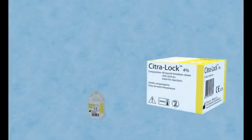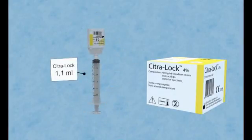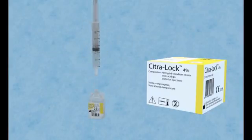Instill the CitroLock. Take the empty 2.5ml syringes and fill these with the precise volume of CitroLock as indicated on the catheter.